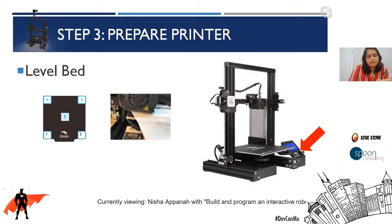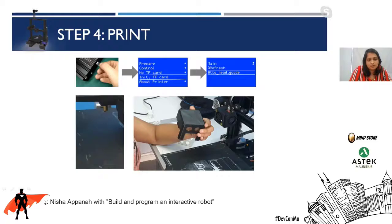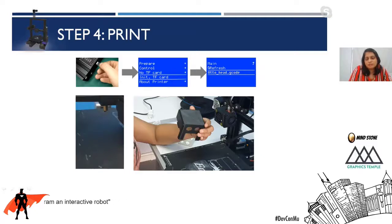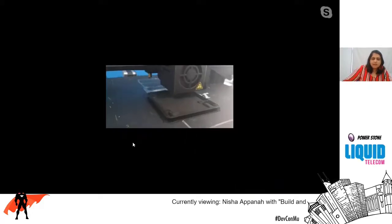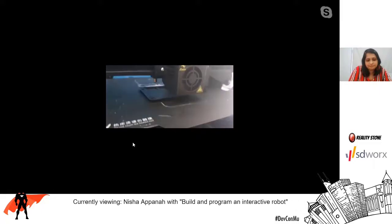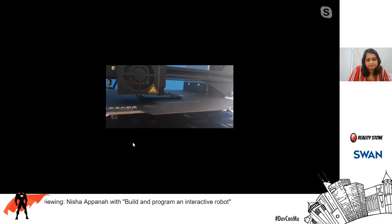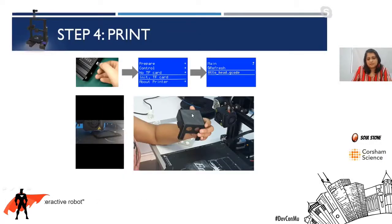After bed leveling, you move on to the print. You save your G-code to a memory card, put that memory card into your printer, click on the SD card option, open your G-code file — for example 'auto head' — and load it in. Then hopefully you should get something like what I'm showing — I've put a little video of when I actually printed the head of my robot. At the end of the day, you get that printed head.